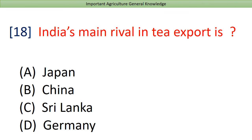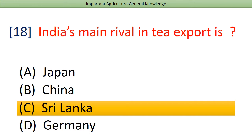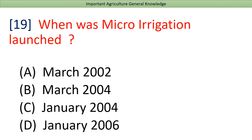India's main rival in tea export is? Answer: Sri Lanka. When was micro-irrigation launched?